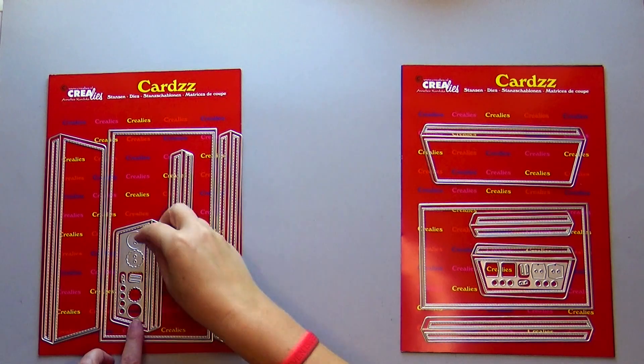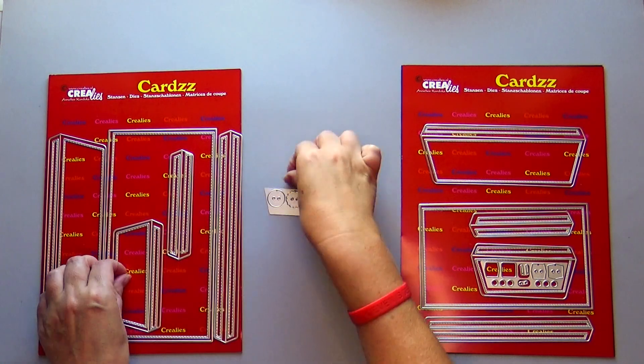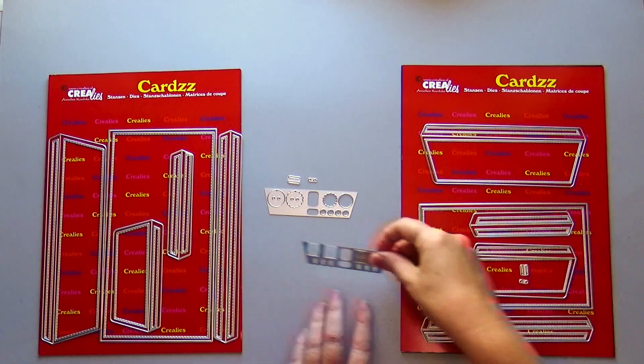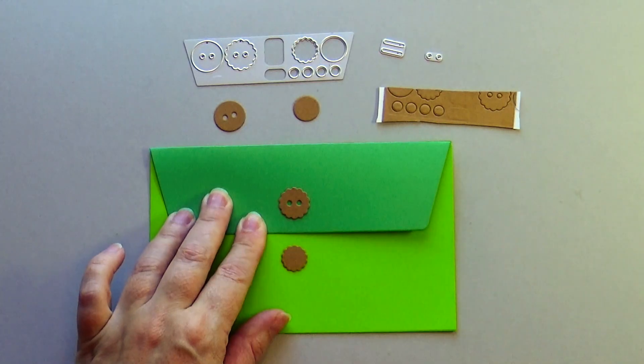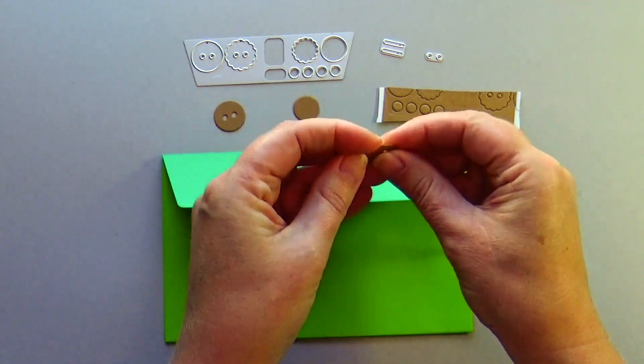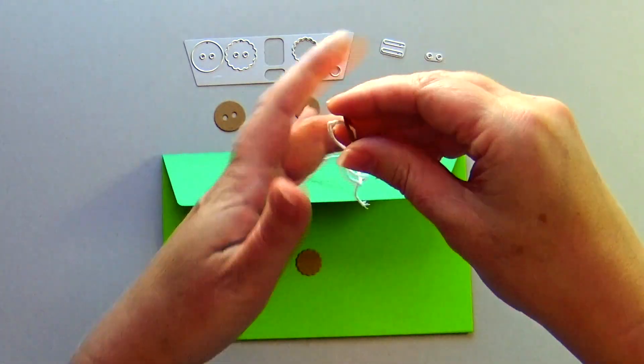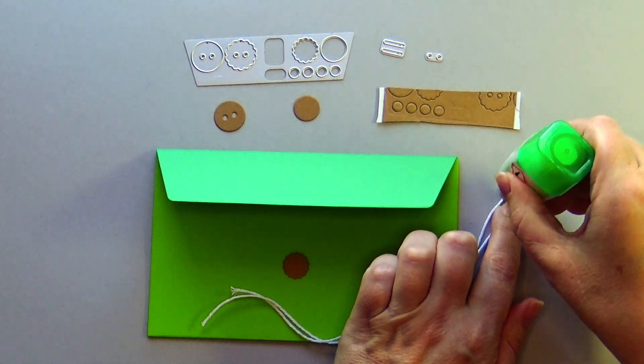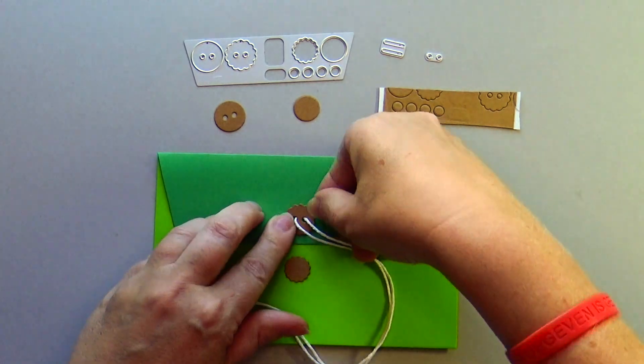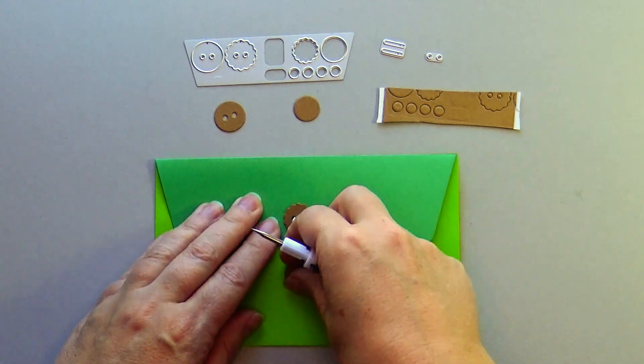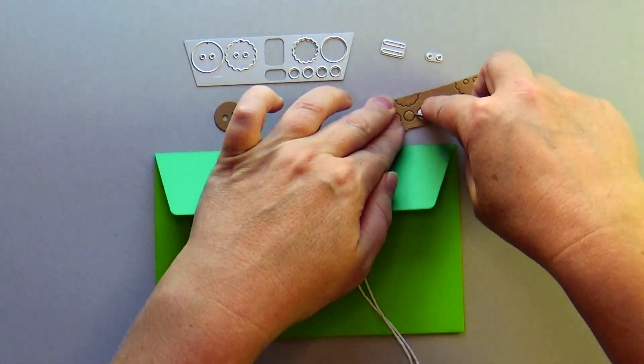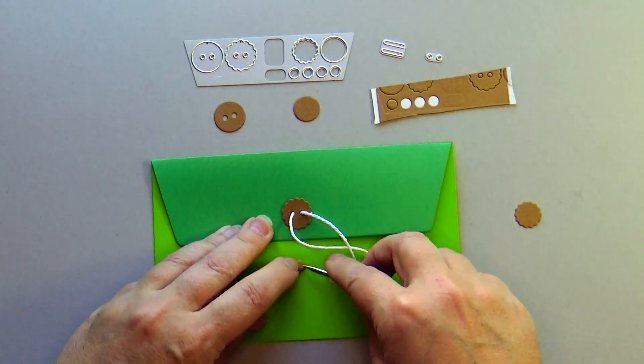You can simply seal the flap but both die sets come with dies to seal the envelope in a different way. You use the small circles to make an elevation where the string will pass later.